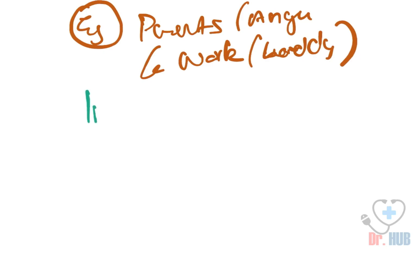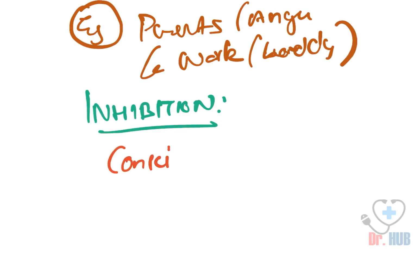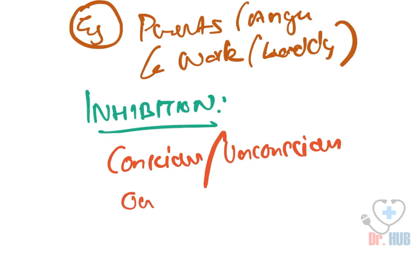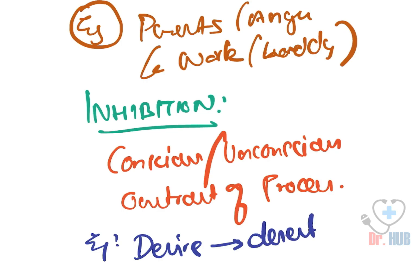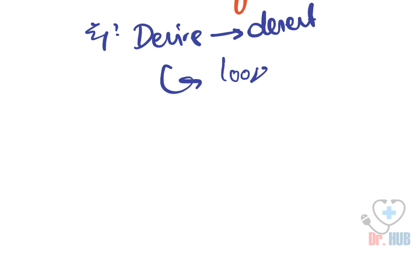Next is inhibition. Inhibition is the conscious or unconscious constraint of a process or behavior. An example is having a desire to eat dessert while also wanting to lose weight — both are contrary goals. This is what is meant by inhibition.